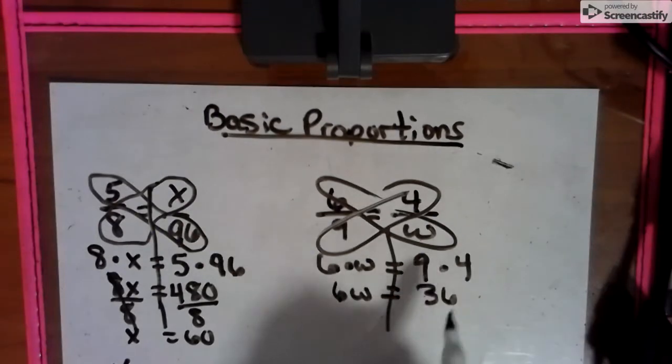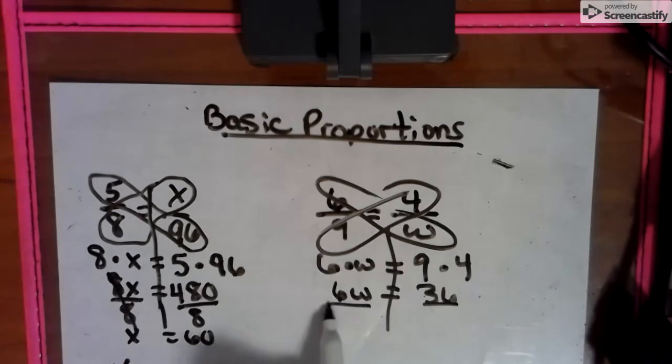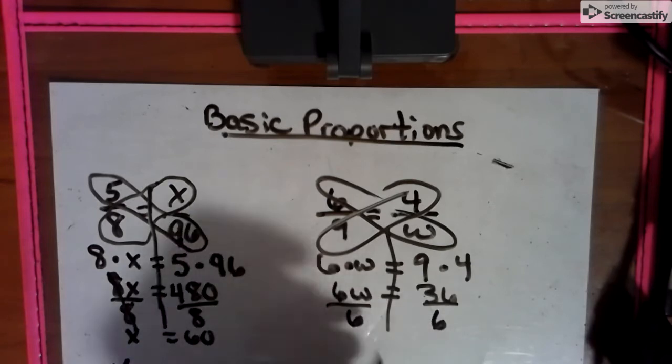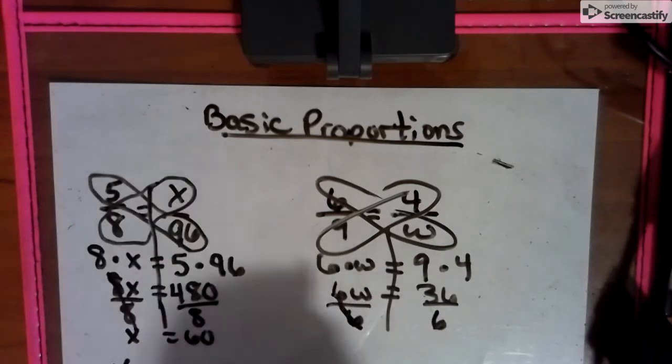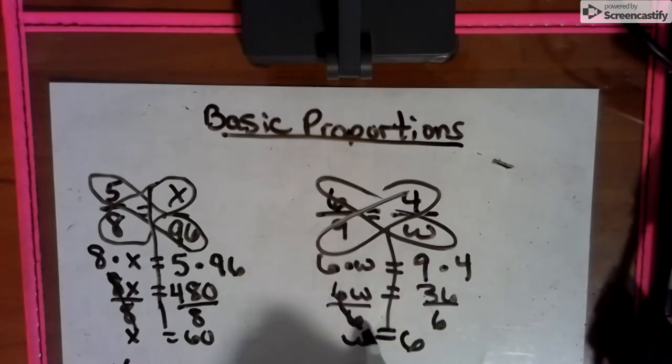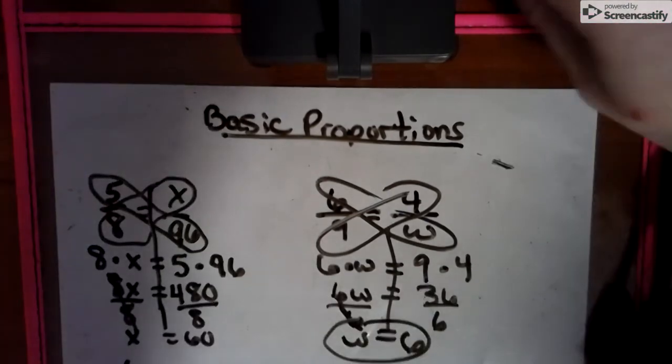We don't put these together and get 94. There's actual math that's happening in between. Then we have to divide both sides by the number that is touching the letter. Remember, the letter is called a variable. A variable is what we call the letter in math. And we get W equals 36 divided by 6 is 6. Our missing piece is that.